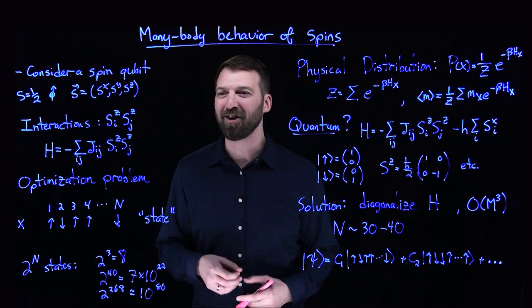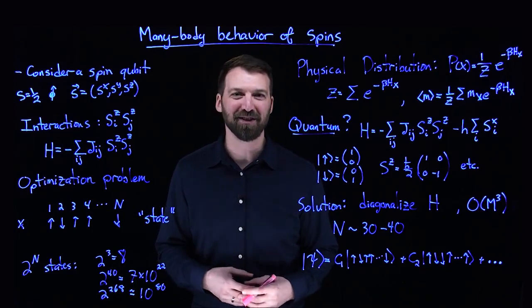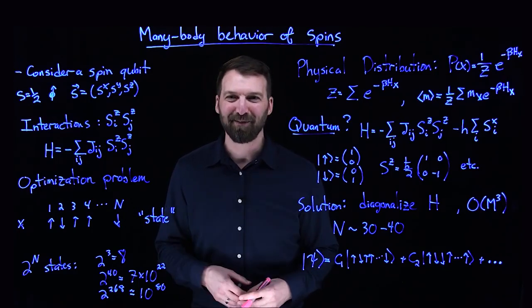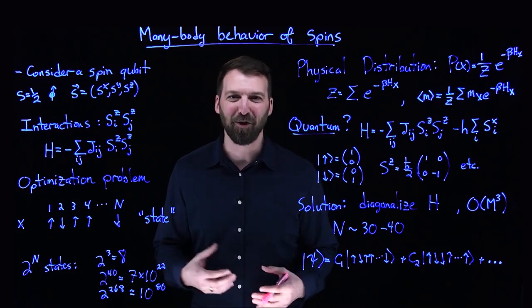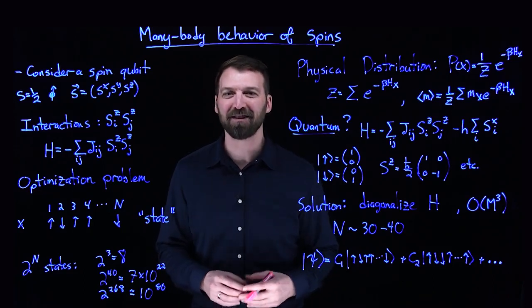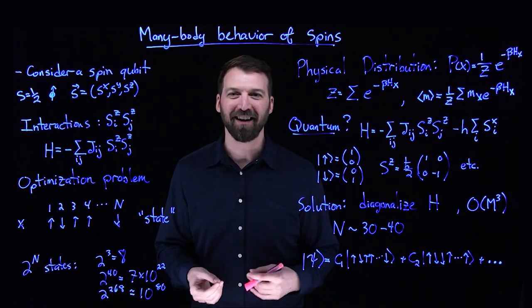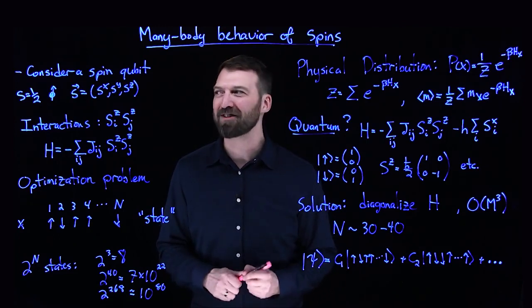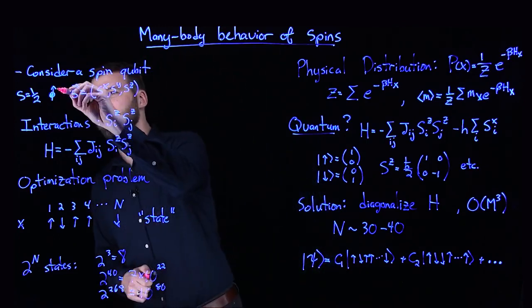This neglects all other complications due to position, momentum, charge, spin-orbit coupling, hyperfine splitting—all these things that occur in electrons—and only focuses on the single object, which is the spin.